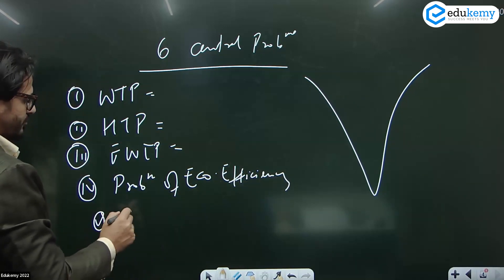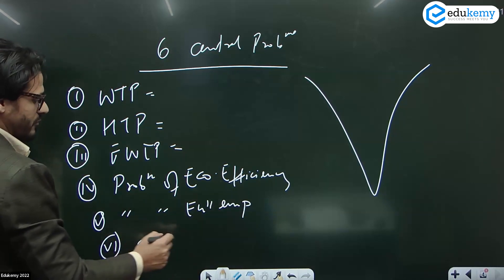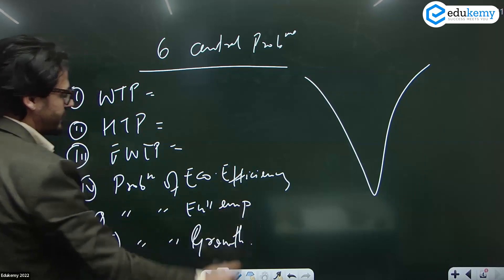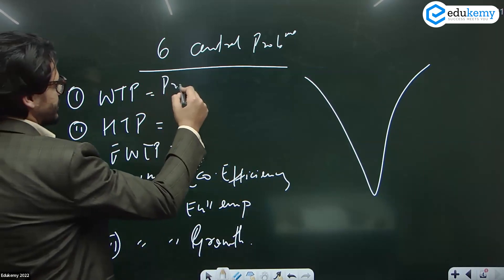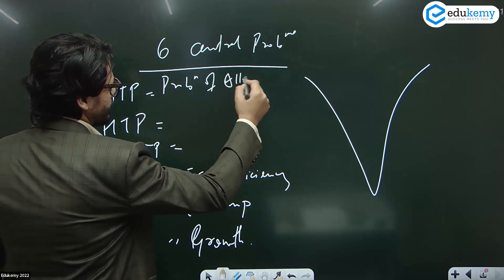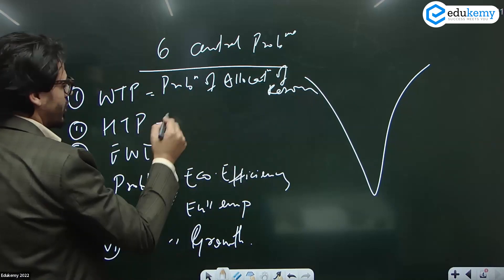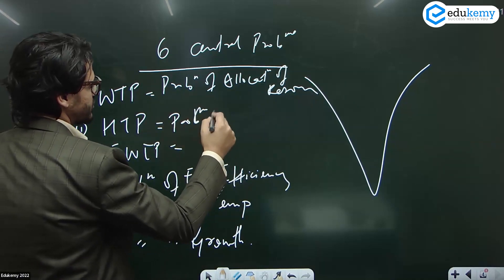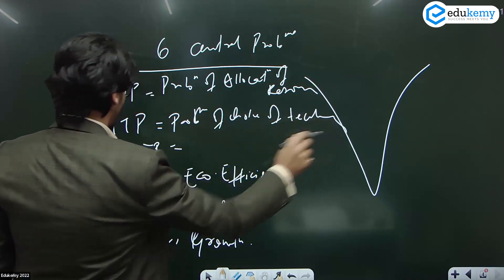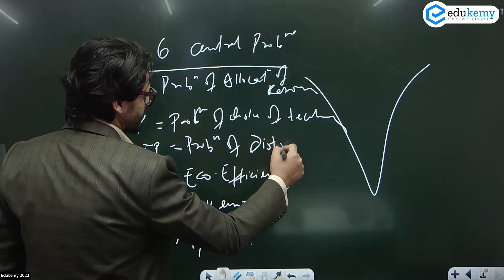Number five is problem of full employment, number six is problem of growth. What to produce means problem of allocation of resources. How to produce means problem of choice of technique. And for whom to produce means problem of distribution.